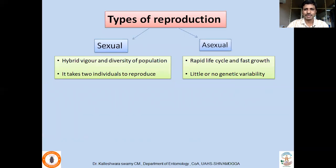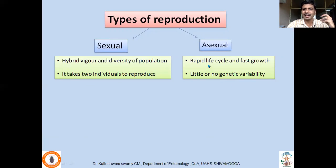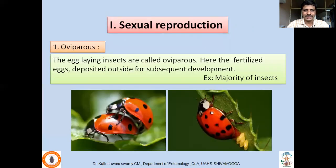Now we will move to the types of reproduction. Majority of insects reproduce sexually; however, a few species also reproduce asexually. The advantage of sexual reproduction is hybrid vigor and diversity of population, but the disadvantage is that it requires two individuals and a well-developed pheromone communication system. Asexual reproduction requires no second individual, giving rapid life cycle and fast growth, but there is little or no genetic variability.